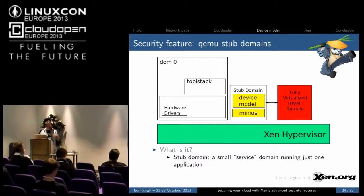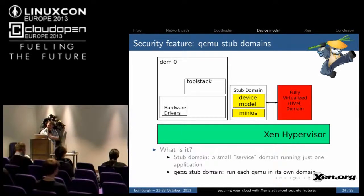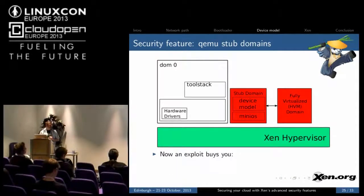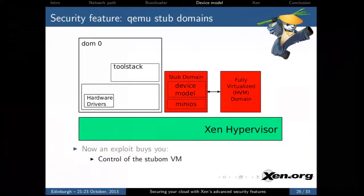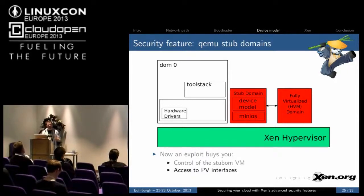A stub domain is a small service domain that runs just one application. It runs on miniOS. A QEMU stub domain is when each VM has a domain that runs alongside it that just services QEMU. Now an exploit buys you control of the stub-dom VM, which since it's a PV interface does get you a few more interfaces to attack, but not really that much. This is the idea of defense in depth — now in order to break through the system, you need two exploitable vulnerabilities instead of just one.